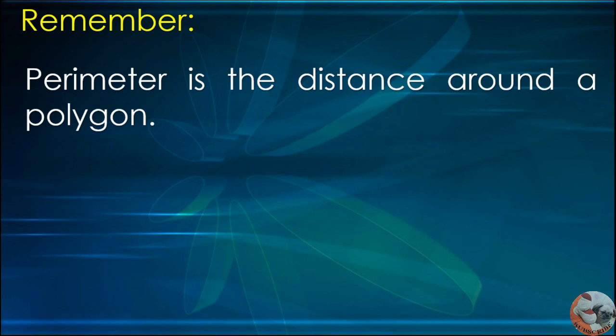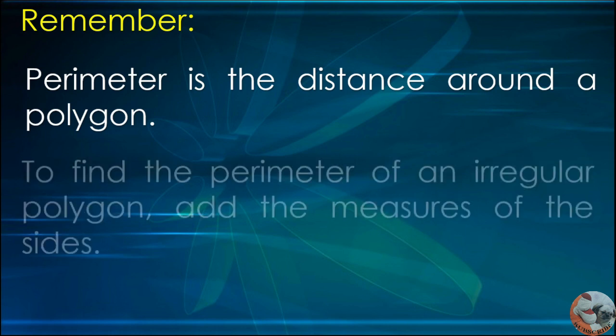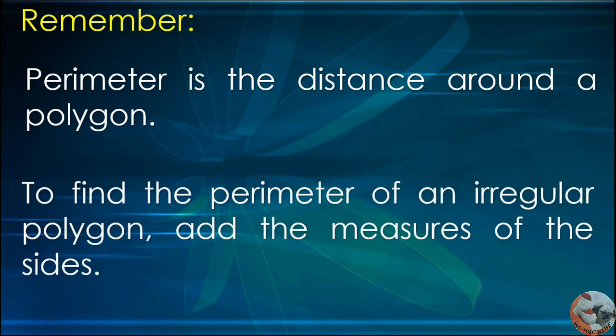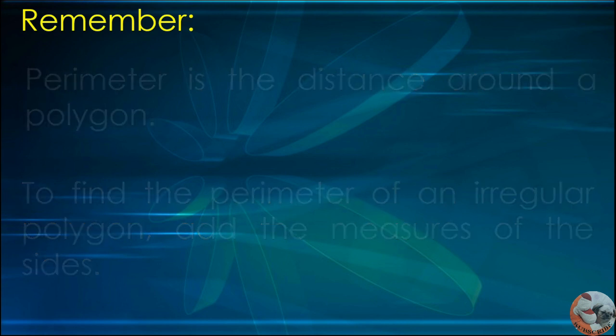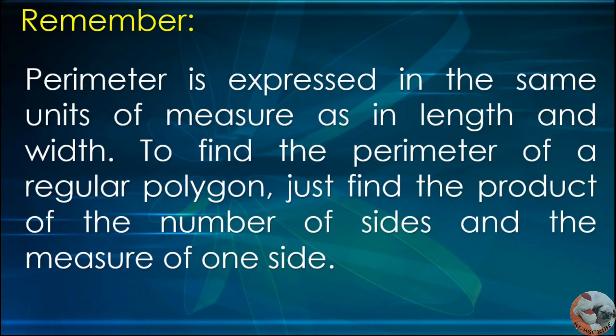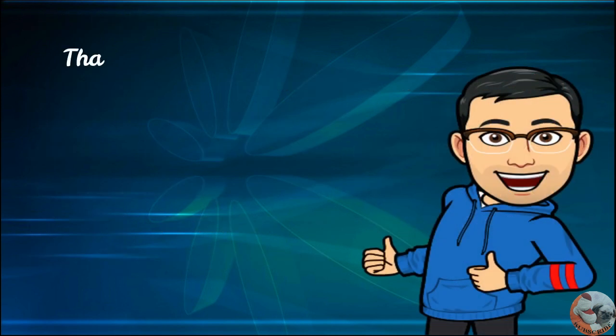Perimeter is the distance around a polygon. To find the perimeter of an irregular polygon, add the measures of the sides. Perimeter is expressed in the same units of measure as in length and width. To find the perimeter of a regular polygon, just find the product of the number of sides and the measure of one side.